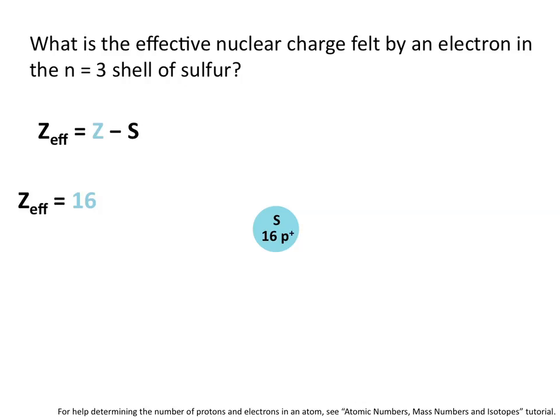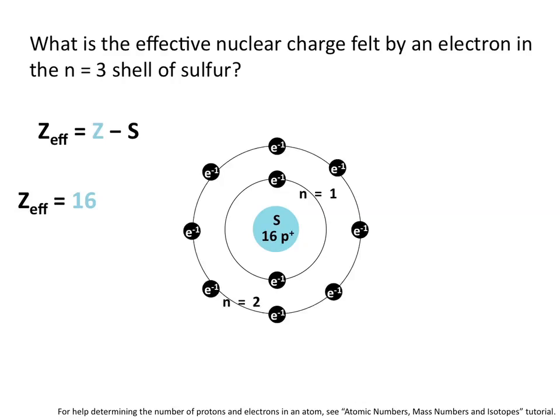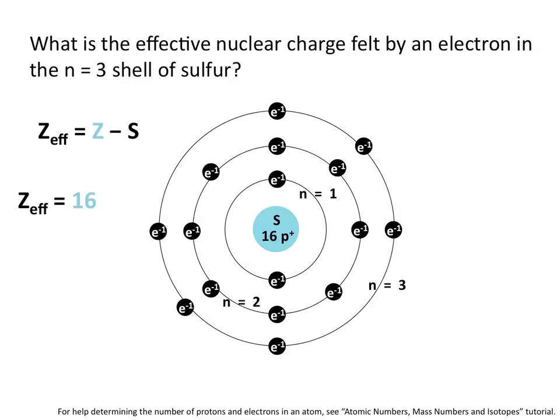Now let's start diagramming the electrons around the nucleus of sulfur. For a neutral atom, the number of electrons is equal to the number of protons, so a neutral sulfur atom has 16 electrons. The n equals 1 shell can hold 2 electrons, leaving 14 more to place. The n equals 2 shell can hold 8 electrons, so now we've diagrammed 10 electrons. The n equals 3 shell can hold 14 electrons total, but because sulfur only has 16 electrons and we've already diagrammed 10 of them, there will only be 6 electrons in the n equals 3 shell.